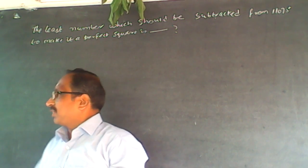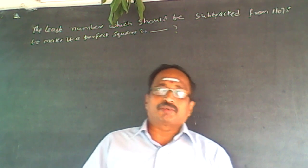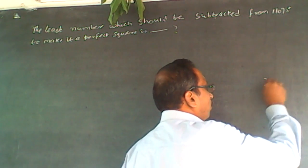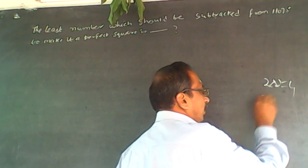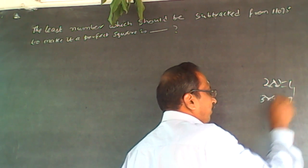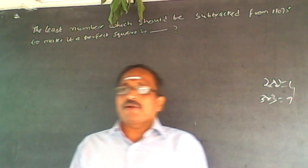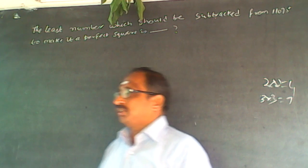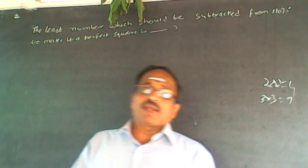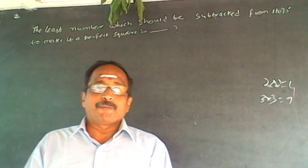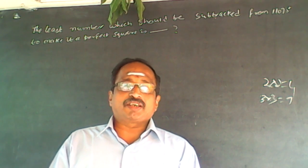So you should know perfect squares. When you multiply a number by the same number - for example, 2 times 2 is a perfect square, that's 4. 3 times 3 is 9, a perfect square. You will have to reduce some number to make it a perfect square.